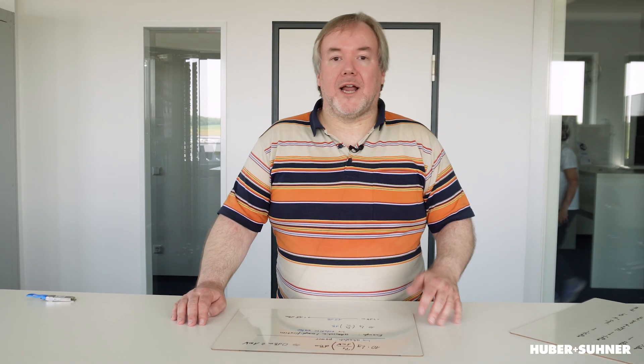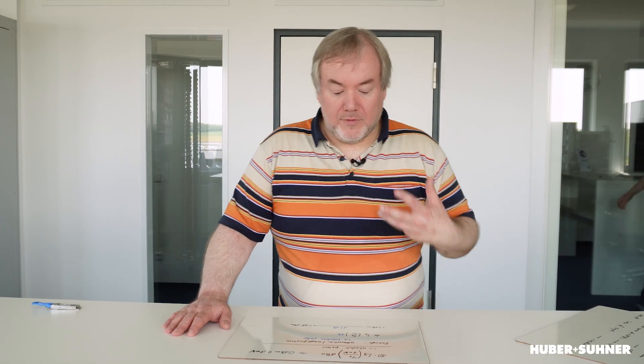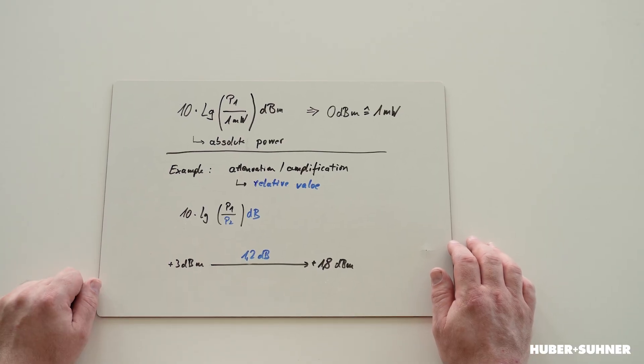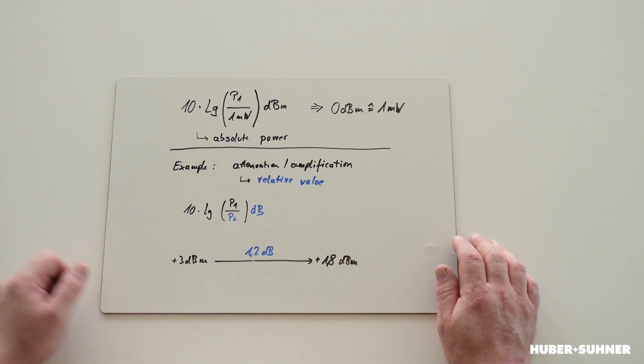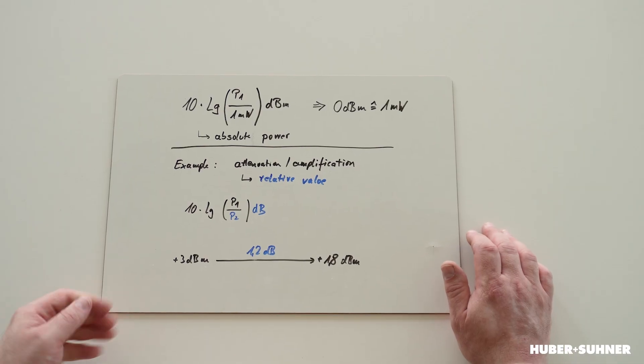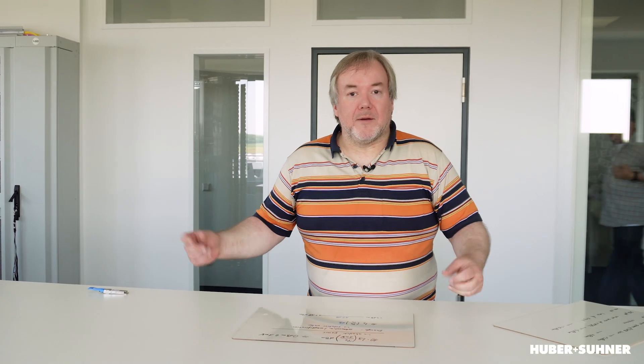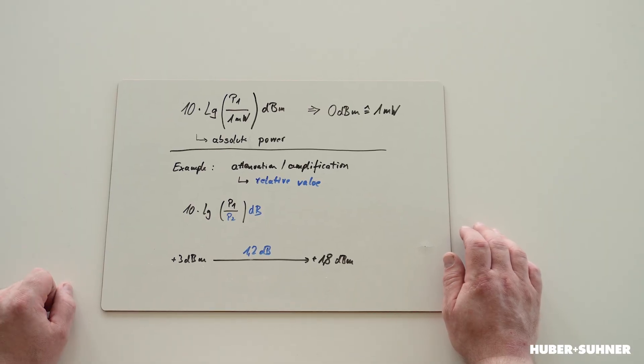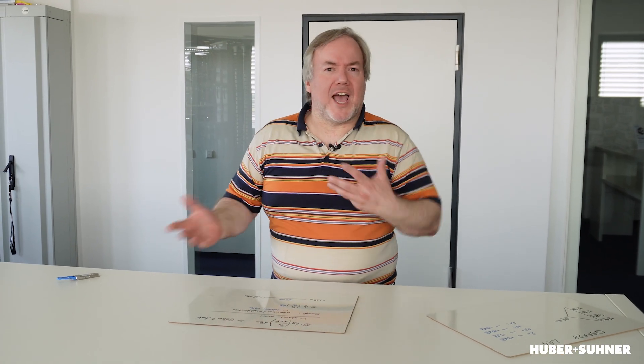The situation changes a little bit if we are talking about attenuation or amplification. Then we have a relative value, so the math changes slightly: it's 10 times the logarithm of the ratio between input and output power. Then we use dB, which tells us something like a fraction — it's really a relative value. For example, we have an input power of plus 3 dBm and a fiber track with 1.2 dB attenuation. We can easily calculate by subtracting that at the end we will have plus 1.8 dBm — simple math, just adding or subtracting.